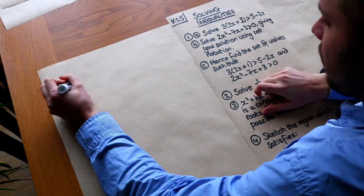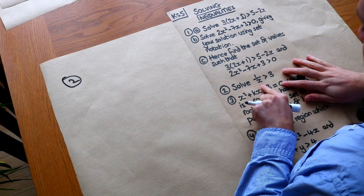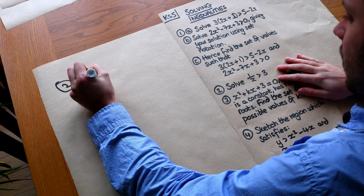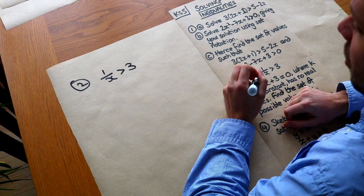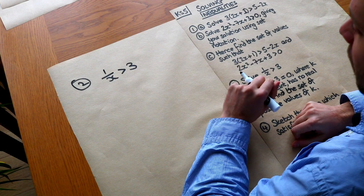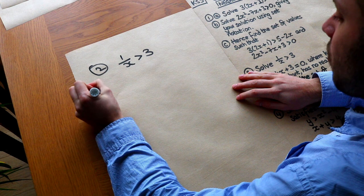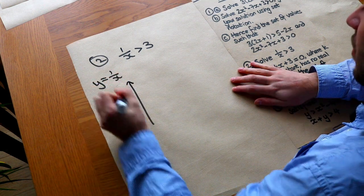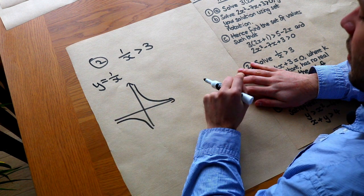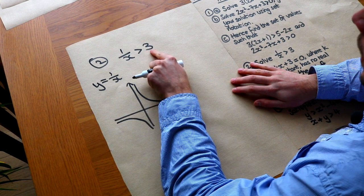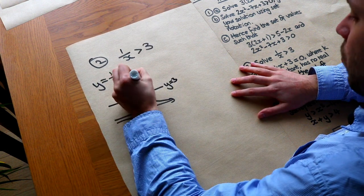This next problem was found in one of the new A-level textbooks. We need to solve 1/x > 3. There are two approaches: using a sketch, or an algebraic trick. Let's use the sketch first. We sketch y = 1/x - the standard reciprocal curve - and also sketch y = 3 as a horizontal line.